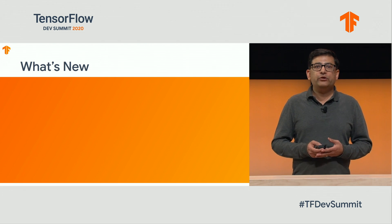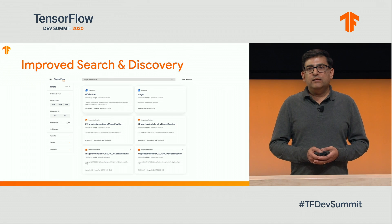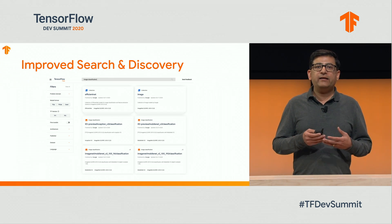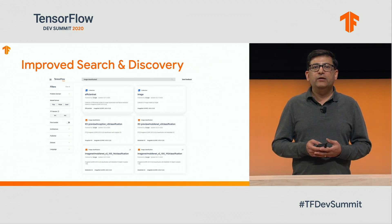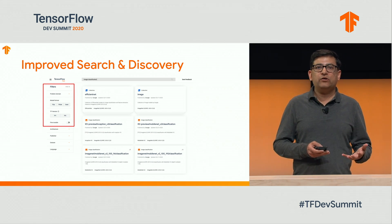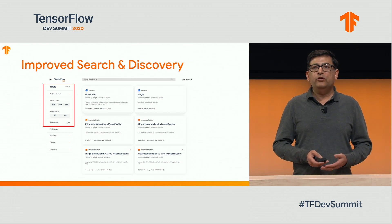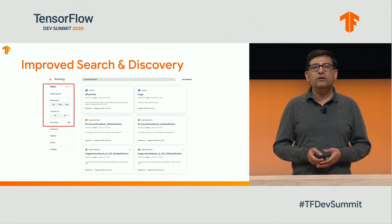Before I close, I want to show you some of the recent improvements and additions on tensorflowhub.dev. As our model collection on TF Hub has grown, we have greatly improved the search and discovery features to make it easy for you to find the model that you need. You can filter by model type, by model formats or deployment targets. For example, if you need a model to run on mobile or in the browser, you can find them easily and quickly. You can also use these filters to specifically find models that are fine-tunable on your own data.